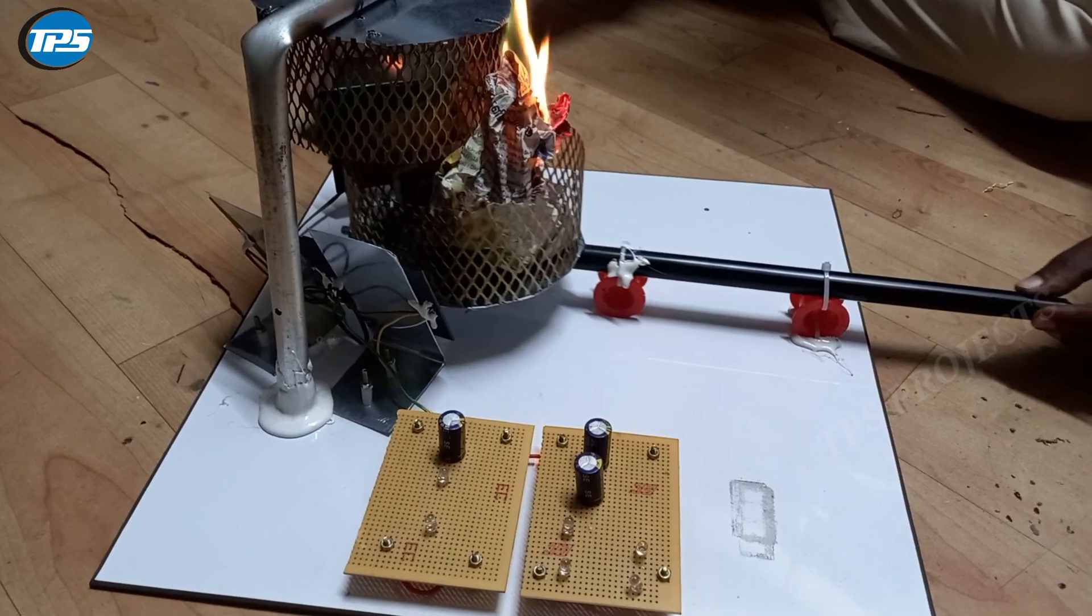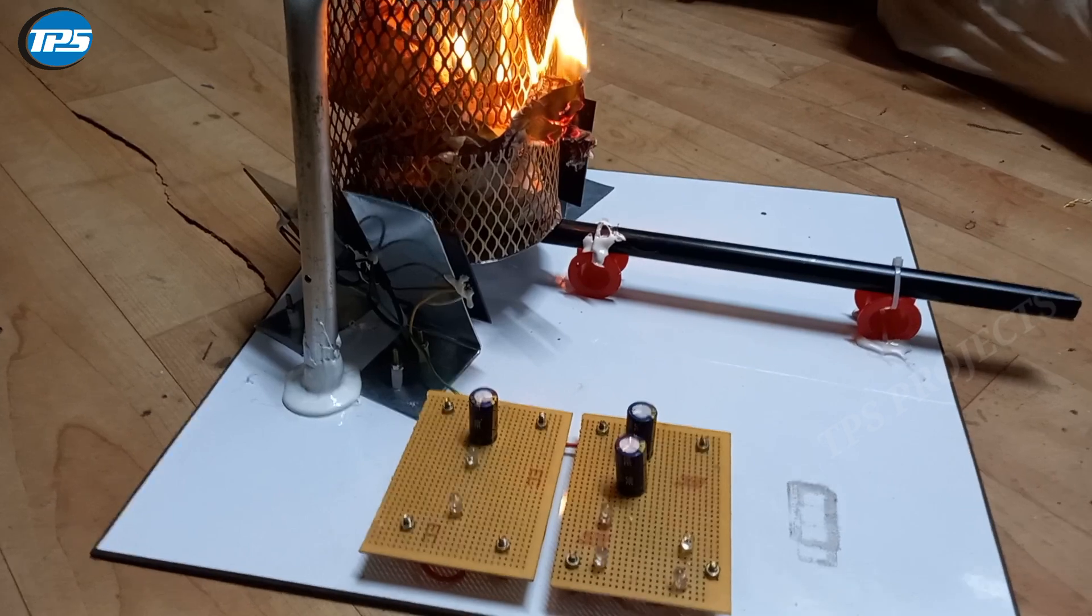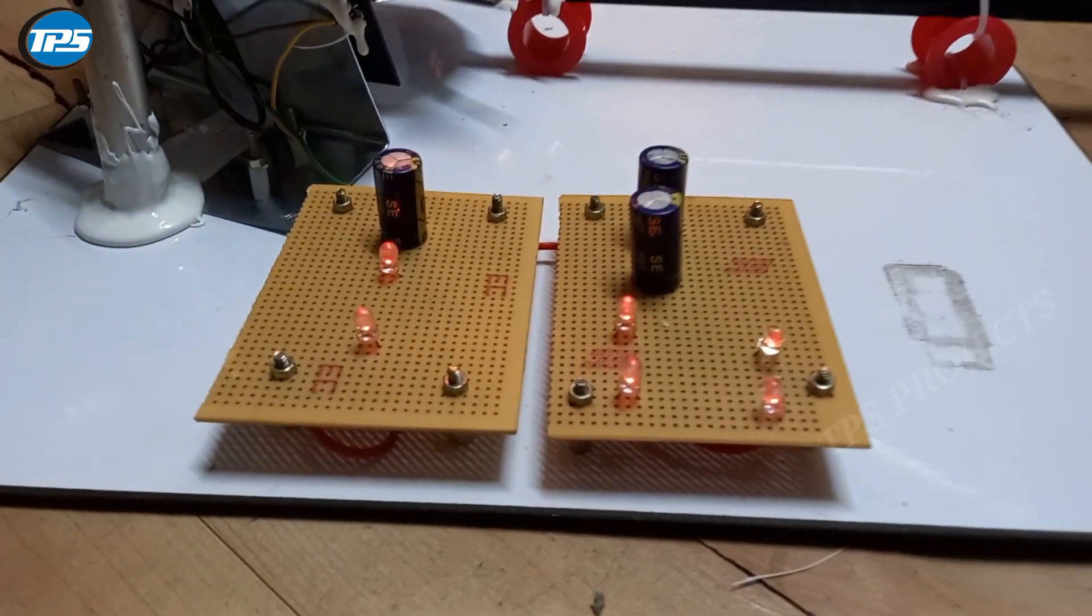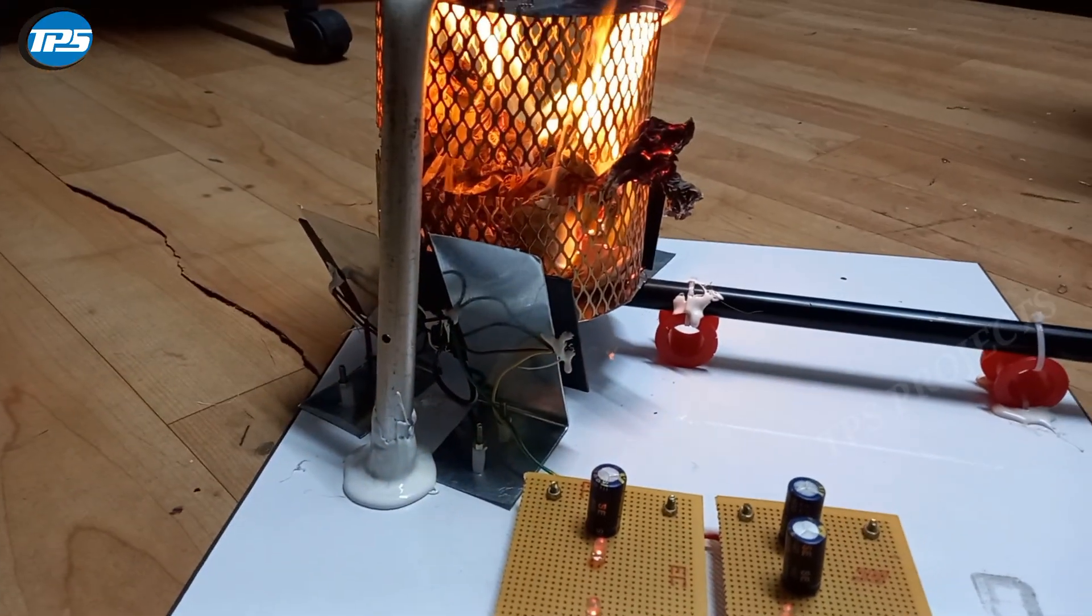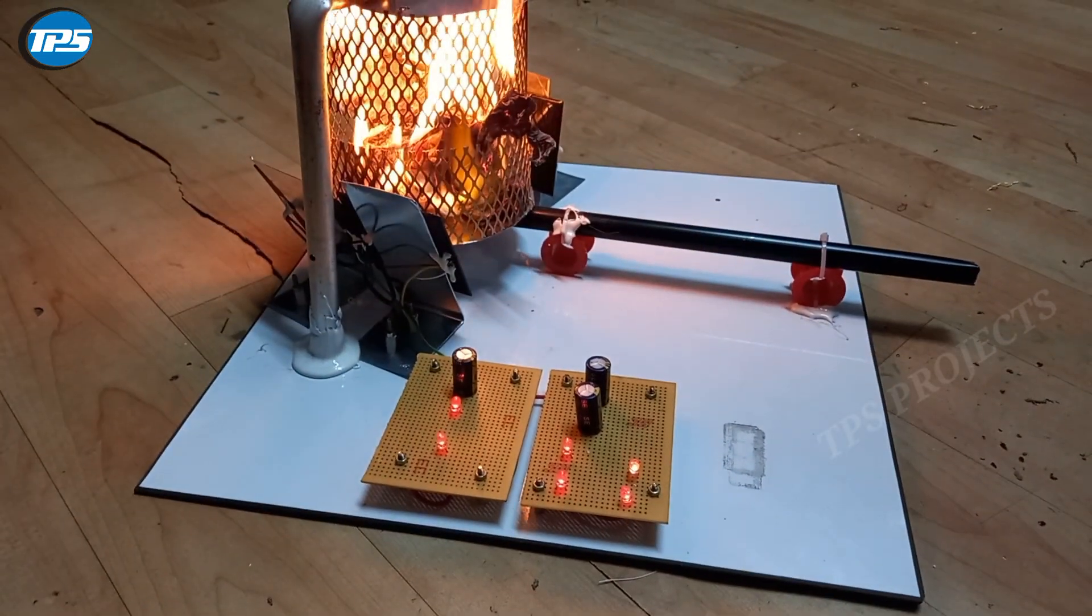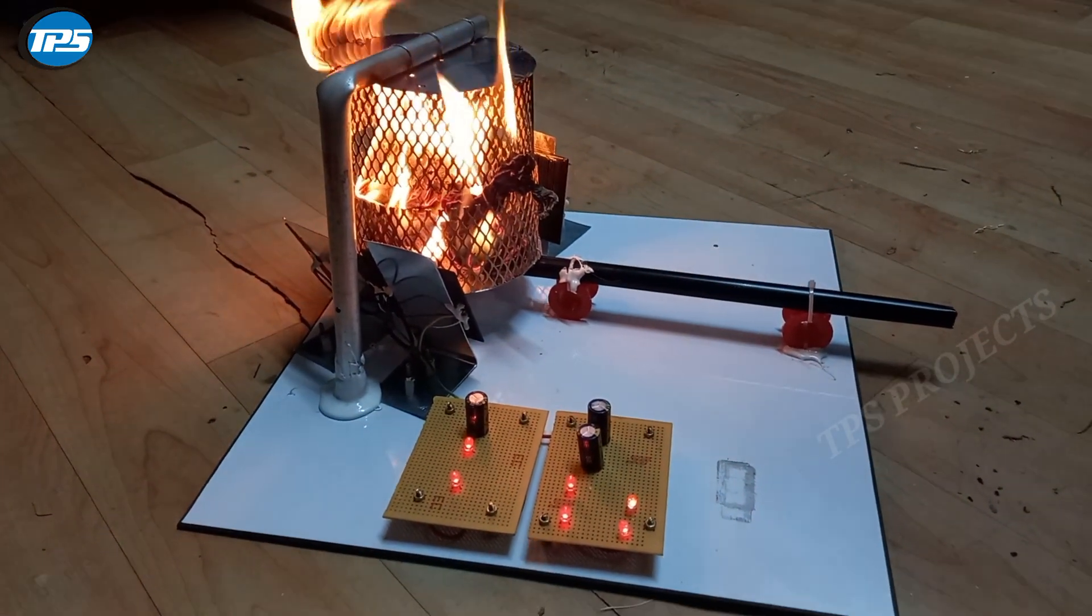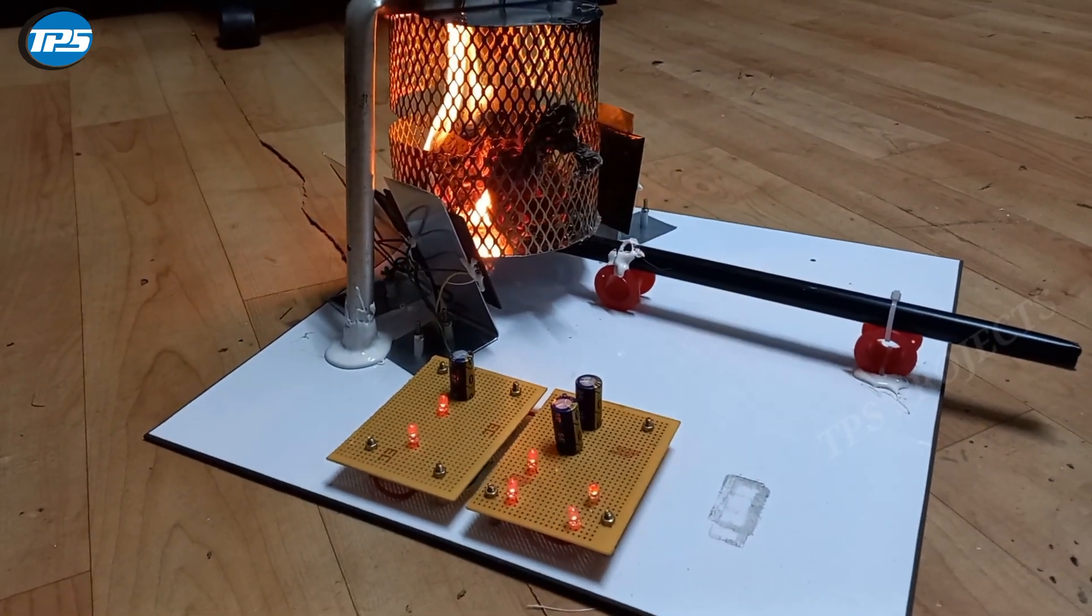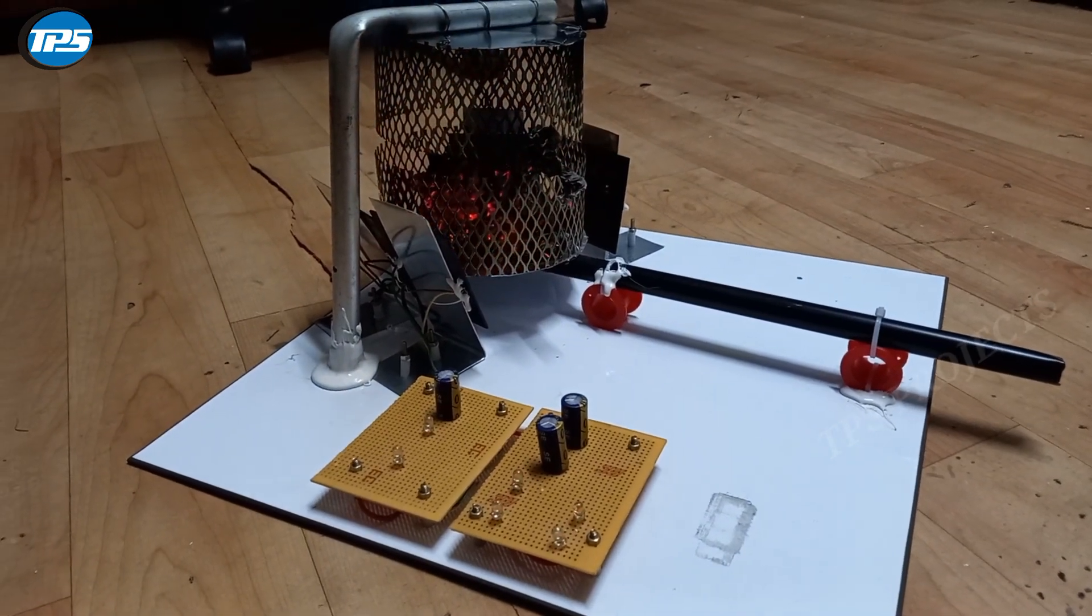This is the complete setup I have made. This is how it works. As the waste gets burned, the solar plate gets heated and electrons flow, and the load gets glowing. The load is the LED here. You can see the LED gets glowing by the electricity we have generated by burning the garbage. Thank you for watching.